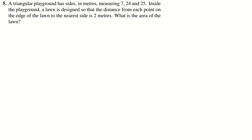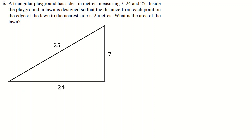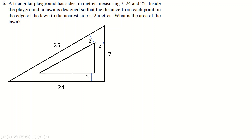Question number five. We have a triangular playground with sides 7, 24, 25. Hopefully you recognize that as a right-angled triangle. We're putting a lawn inside such that the distance from each point on the edge of the lawn to the nearest side is always 2 metres. So we're 2 metres away from this side inside the triangle; we can't go too high or we'd be closer to another side. We draw a line perpendicular to each side at distance 2, then travel parallel to each side. At each corner, when the perpendicular distance to the adjacent side would drop below 2, we stop.